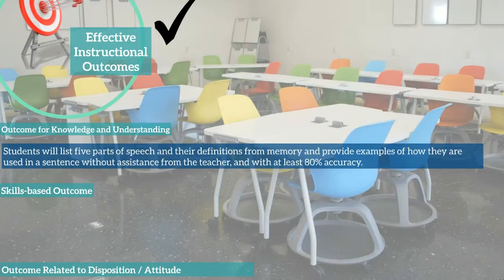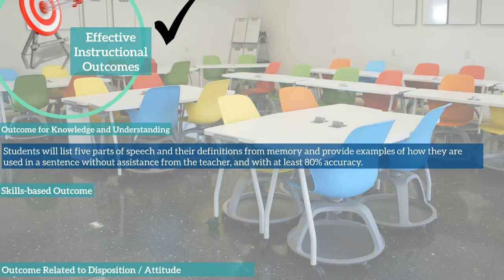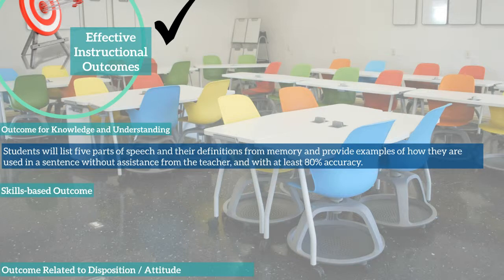Here is an example of an outcome for knowledge and understanding: Students will list five parts of speech and their definitions from memory, and provide examples of how they are used in a sentence, without assistance from the teacher, and with at least 80% accuracy. This is definitely a specific outcome. It's measurable — it asks for at least 80% accuracy on an assessment. It's attainable, as long as it's within the student's zone of proximal development. It's realistic: if we have taught the parts of speech, they should be able to provide examples and definitions. And it's timely, in that it would be assessed at the end of a lesson or unit.